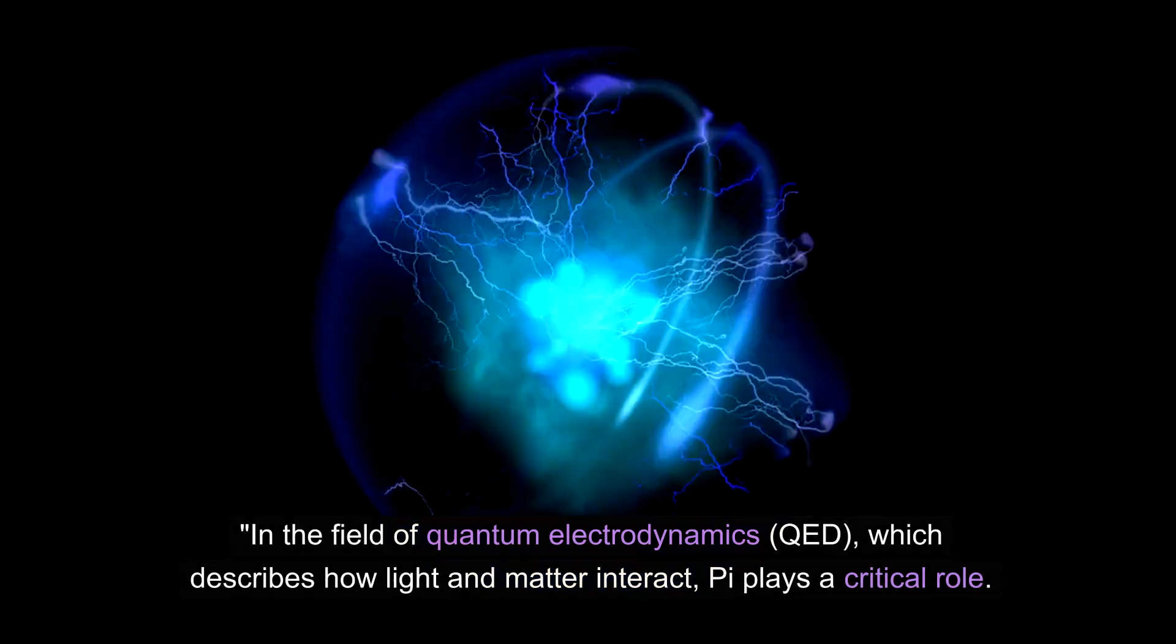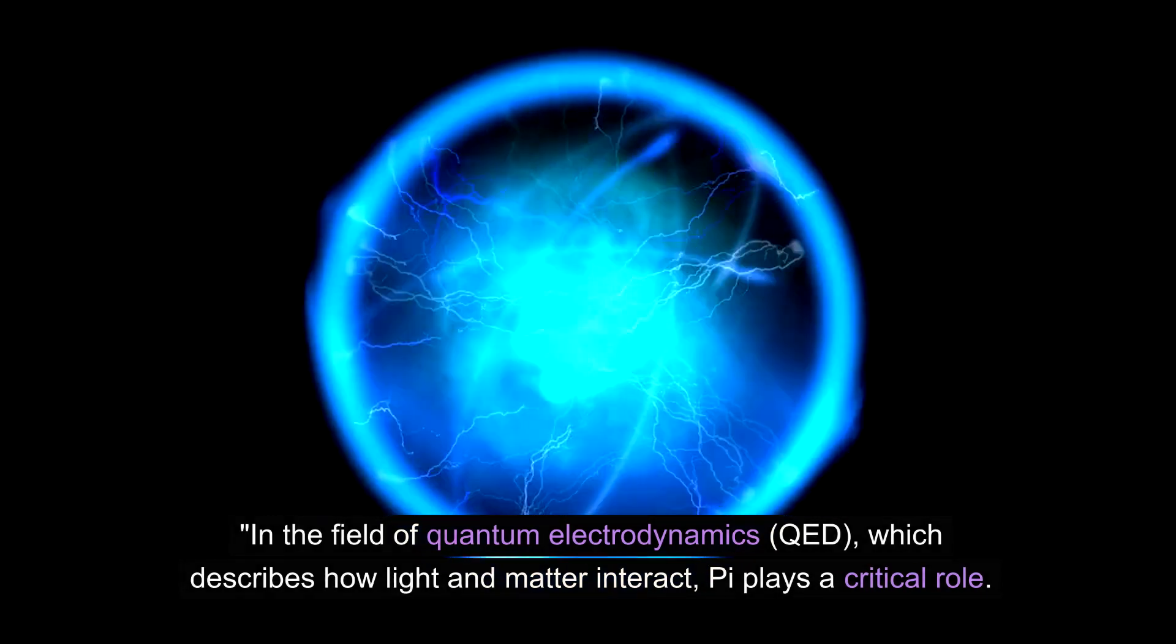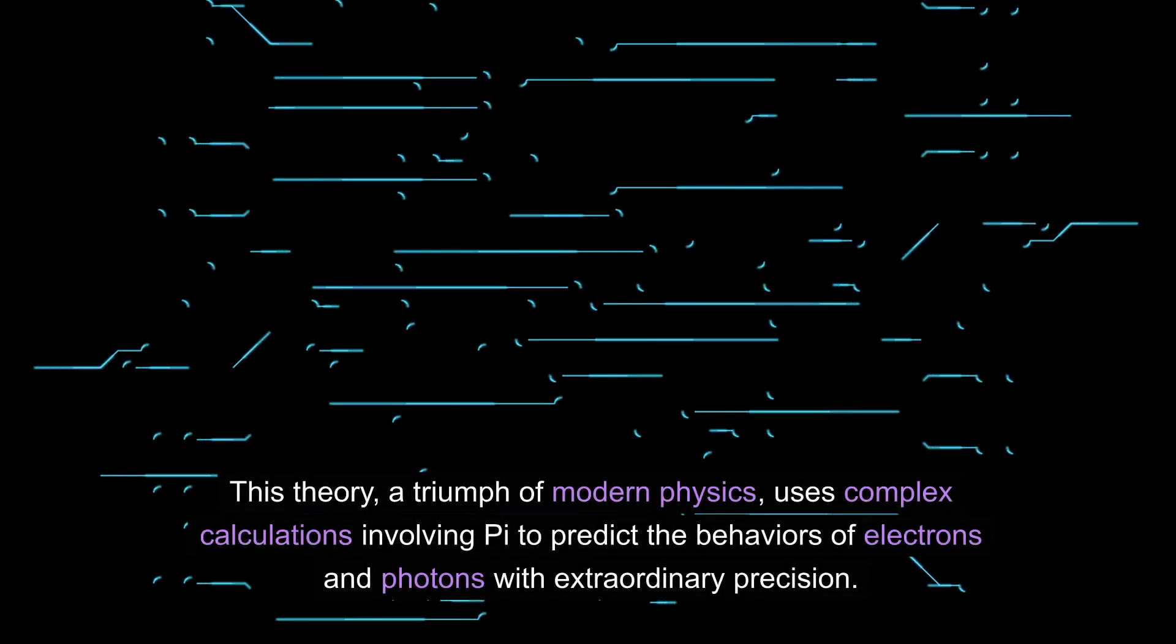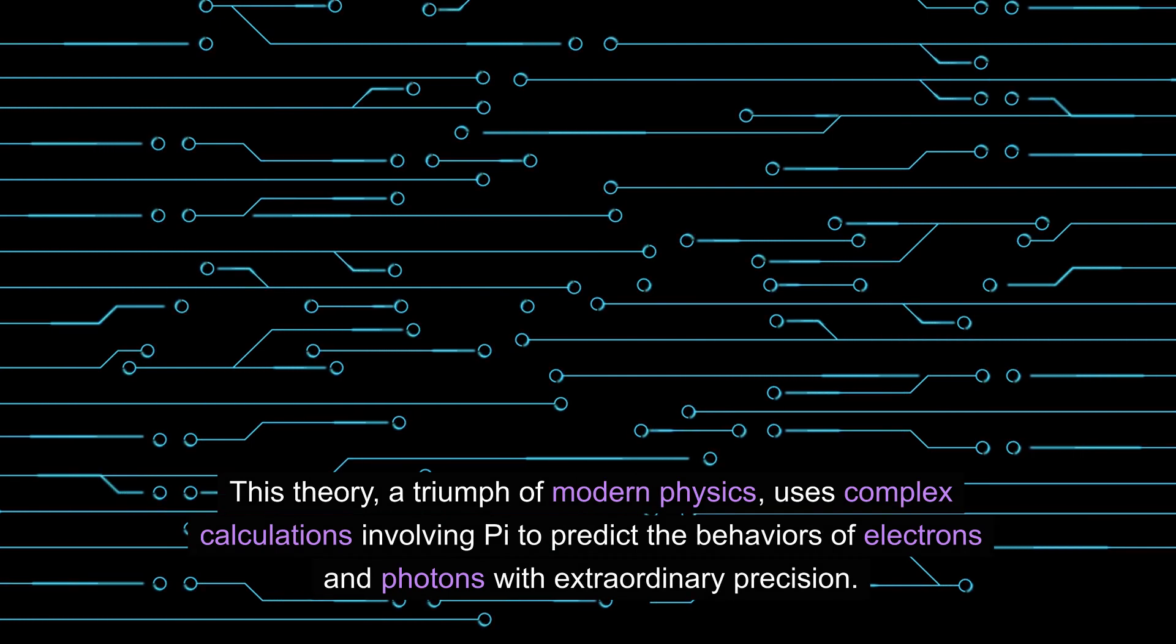In the field of quantum electrodynamics, QED, which describes how light and matter interact, pi plays a critical role. This theory, a triumph of modern physics, uses complex calculations involving pi to predict the behaviors of electrons and photons with extraordinary precision.